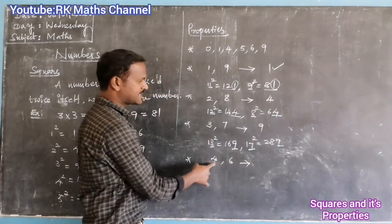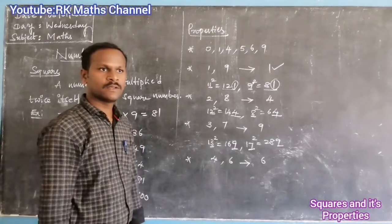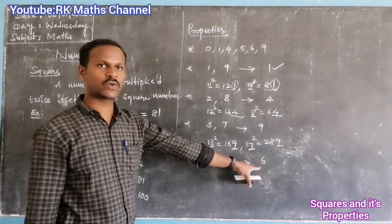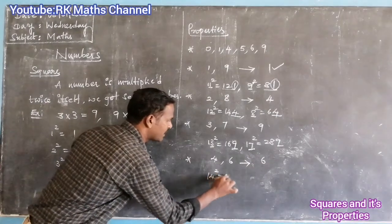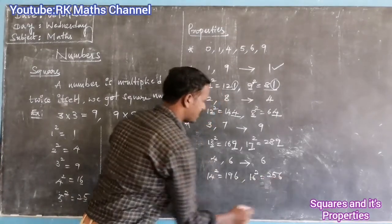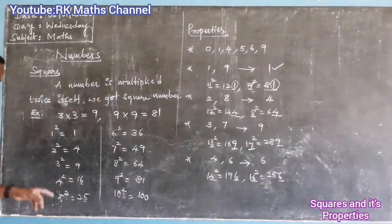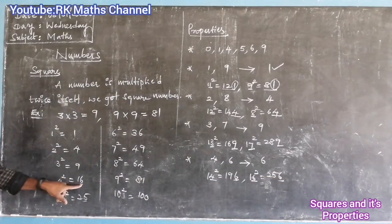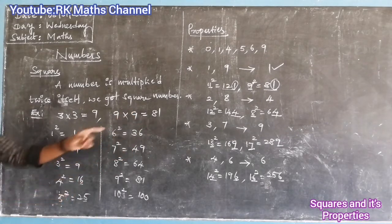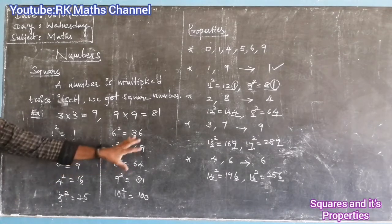If the unit place is 4 or 6, then the square's unit place is 6. For example, 14 squared is 196, and 16 squared is 256. So 4 squared is 16 and 6 squared is 36 — both end in 6.